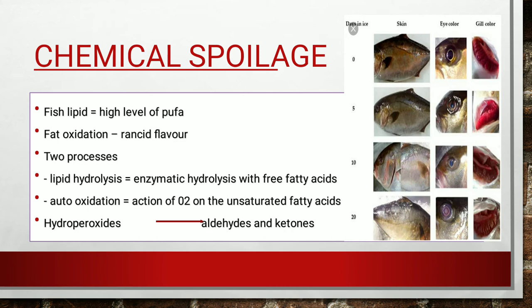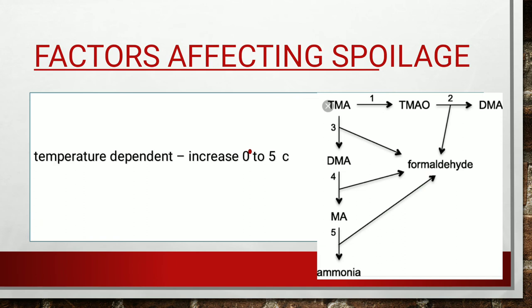The detection method involves checking skin color, eye color, and gill color. These observations are made over time — for example, on day one, then after five days, after ten days — and analyzed using sensory methods such as the Torrymeter method, the European method, and the QIM method. We will study these methods in the next class.